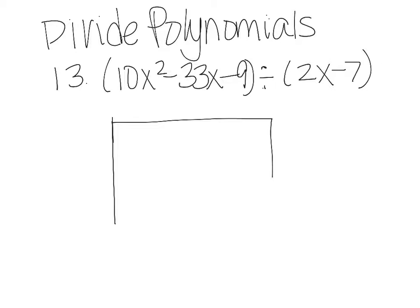So I draw my box. I put my 2x minus 7 and I put my 10x squared in that top left box. That happens every single time. That first term goes in that first box.